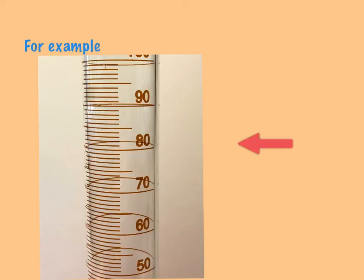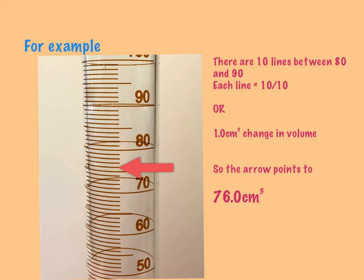Now to the biggest one—the biggest one we've got measures up to 100 cm cubes. If it goes above there, you can't measure it accurately. Between 80 and 90, I've got 1, 2, 3, 4, 5, 6, 7, 8, 9, 10 lines. So this tells us that I have one cm cubed differences. So let's look at this one: there is 70, 71, 72, 73, 74, 75, so that line there is 76.